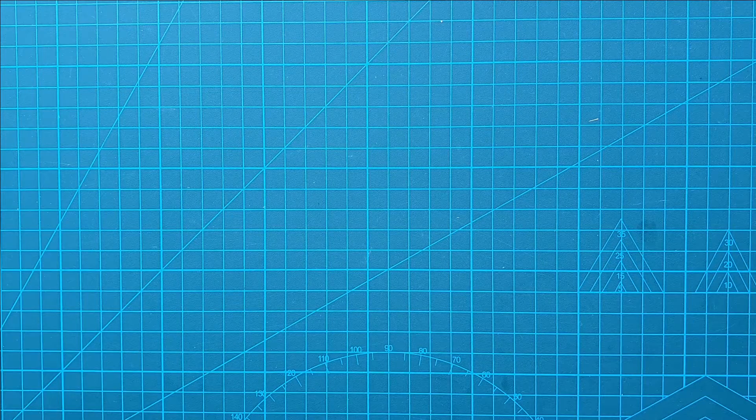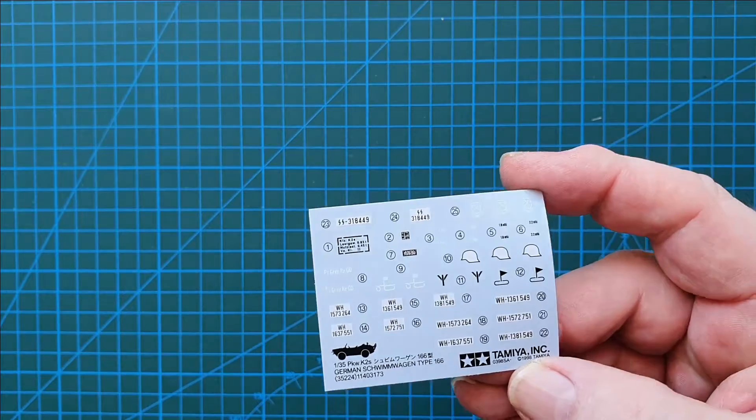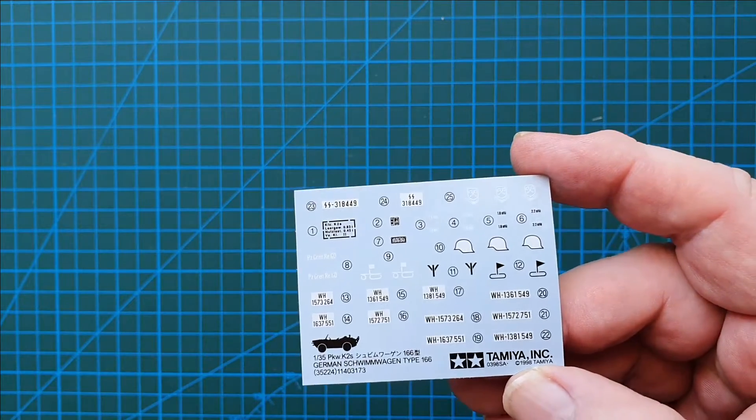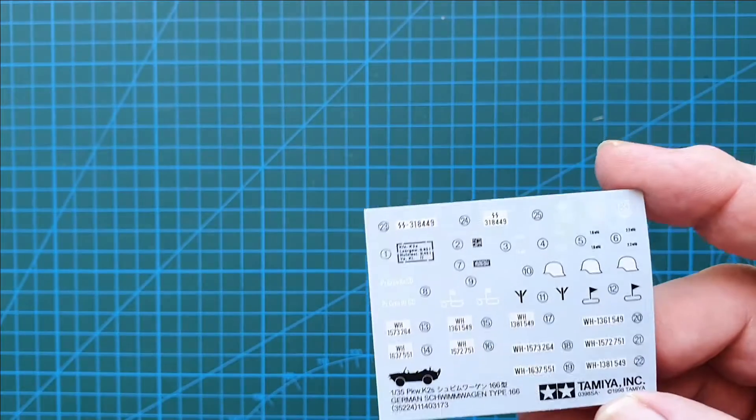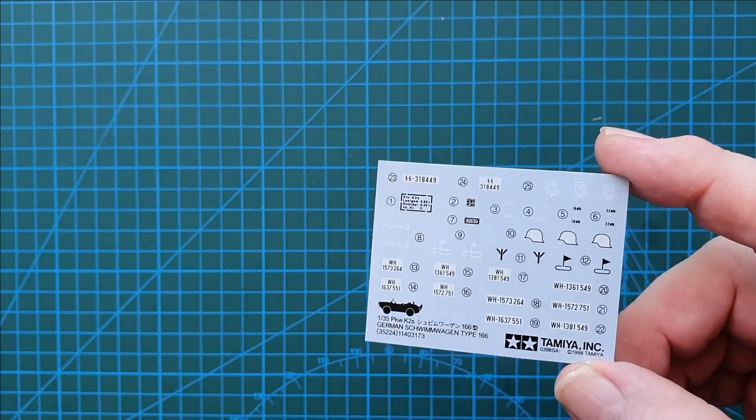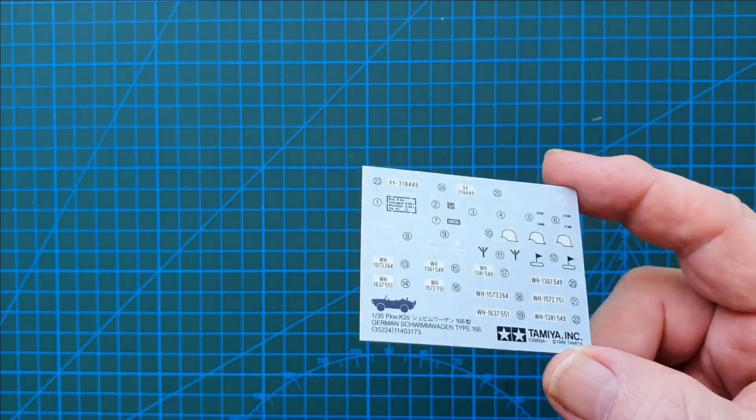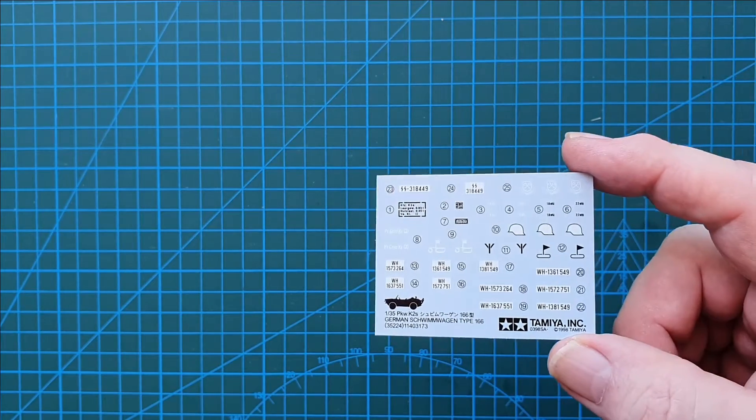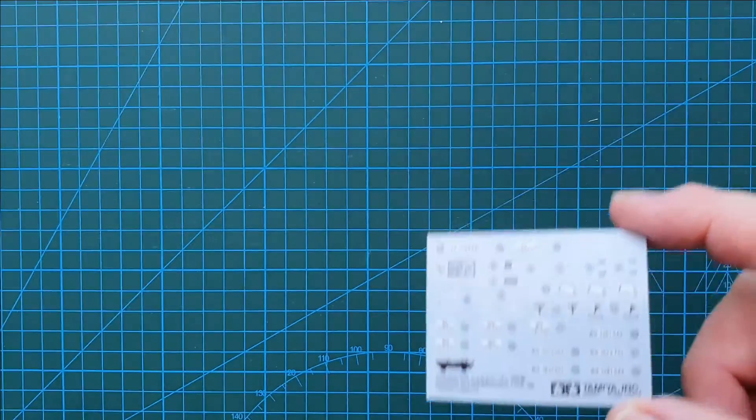So let's have a look at the decals. The decals do have what I can see tactical and divisional marks as well as number plates. They're all Heer marked number plates. And no I'm wrong. There's a couple of SS ones there too. I will give you a still photo of that so you can have a good look. But the decals look nice and sharp and clear. I like the fact they give you tactical divisional marks. A lot of kits nowadays don't do those.